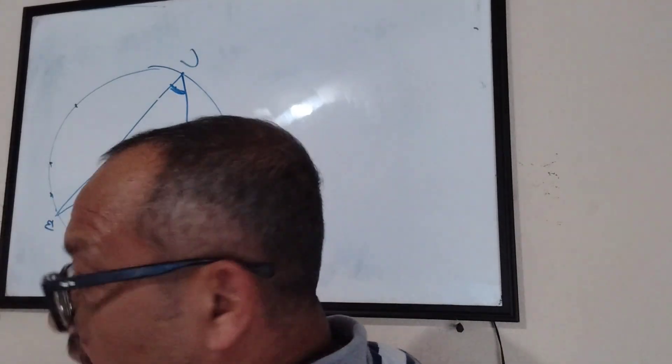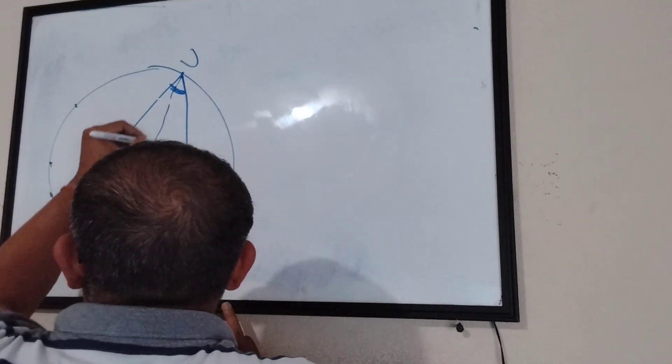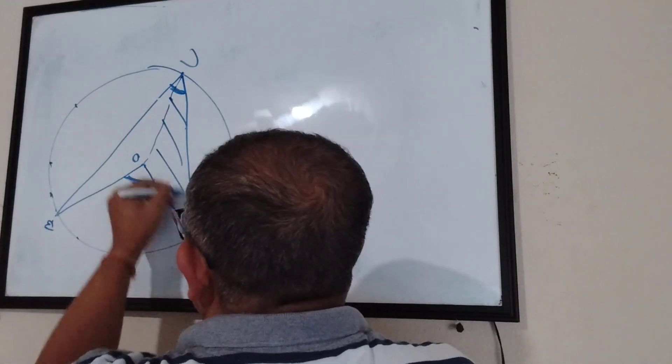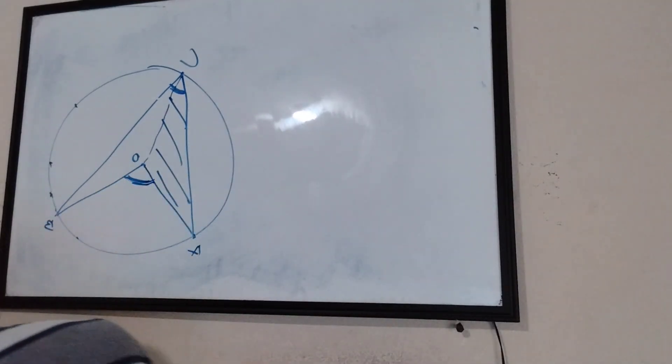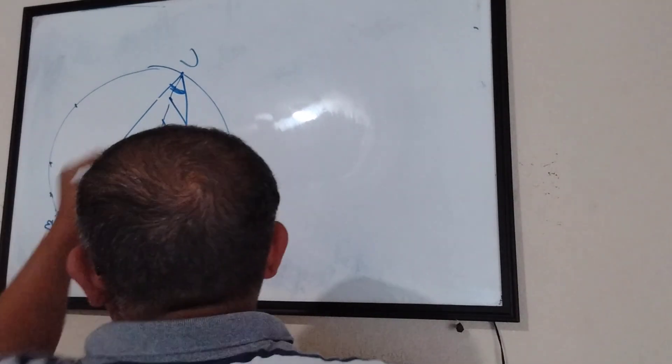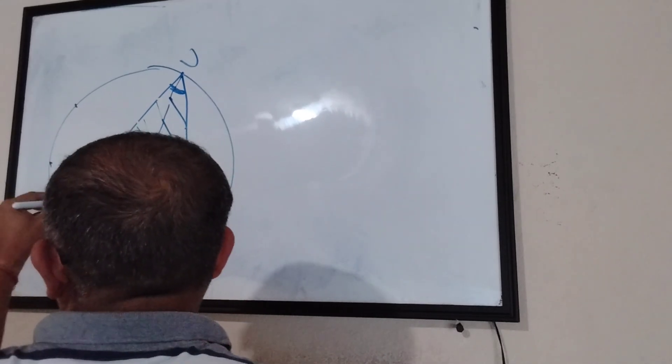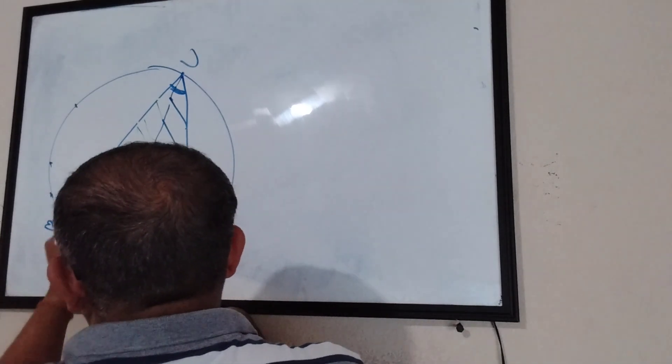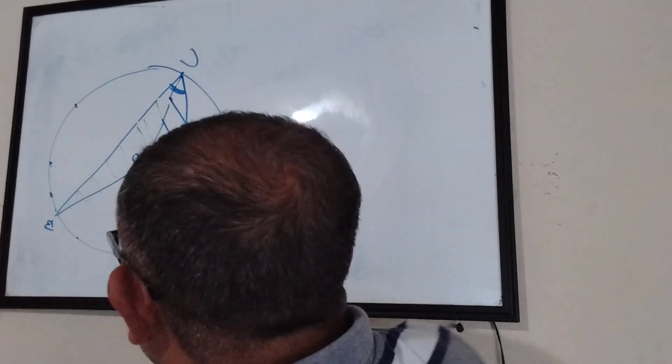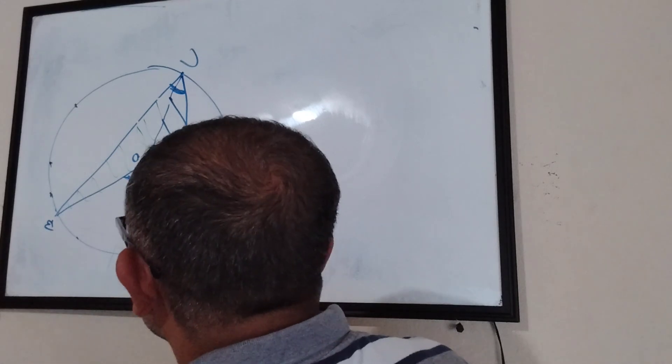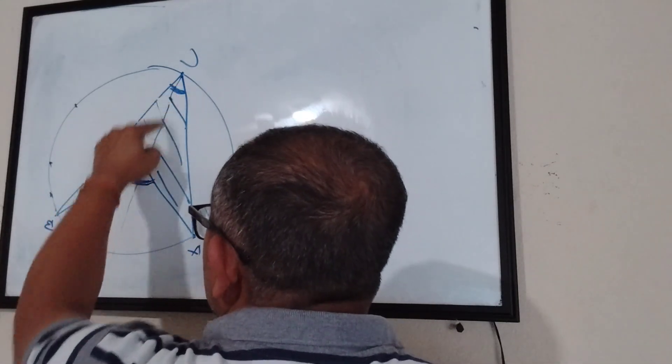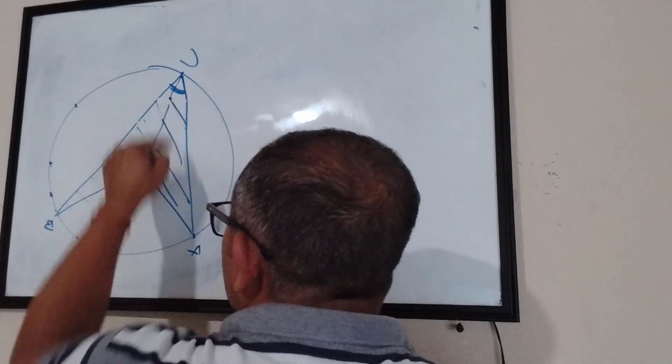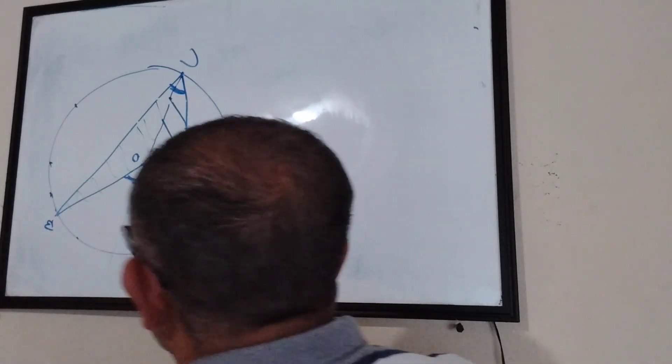This angle will be two times this angle. What did we do? How did we prove? We just joined this point with the center. Now we have two triangles, one triangle in blue, one triangle in green. We picked the blue triangle. And what we did was we just extended this line further. When you look at the blue triangle, it's an isosceles triangle. This side and this side are the same because both are radii.